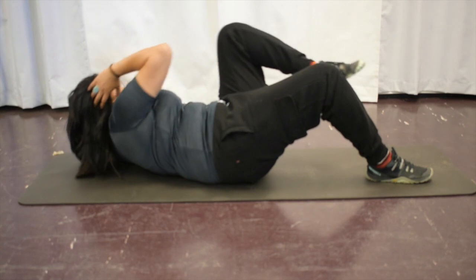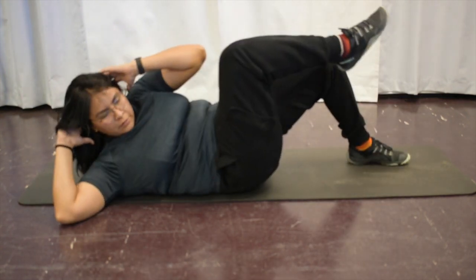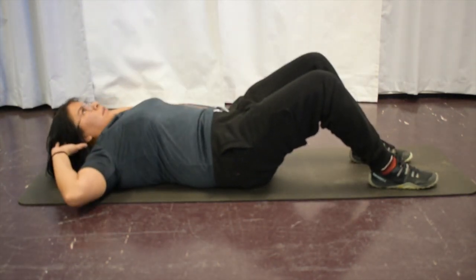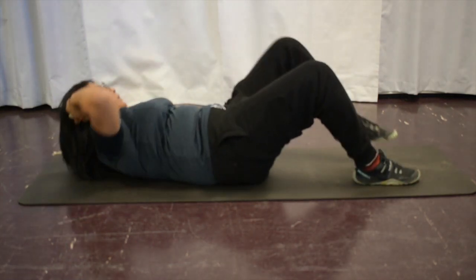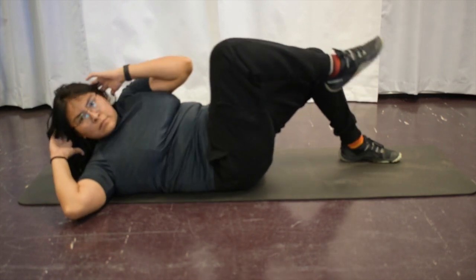The next exercise, we're going to do slow bicycle crunches. Again, I'm going to emphasize on slow so your core can do the work and you're not just swinging your arms and legs. Again, control motions. You can do this for three sets of eight.